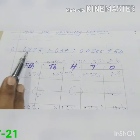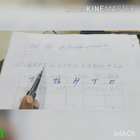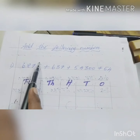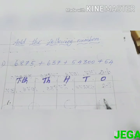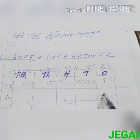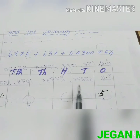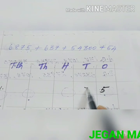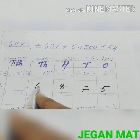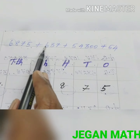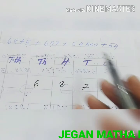Take the first number 6875. The ones digit is 5, so put 5 in the ones place from the right side. Then arrange: seven in tens, eight in hundreds, six in thousands. For the next number 637, starting from the ones place: seven, three, six.